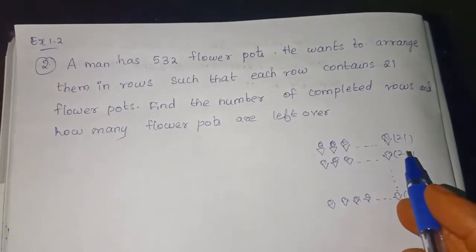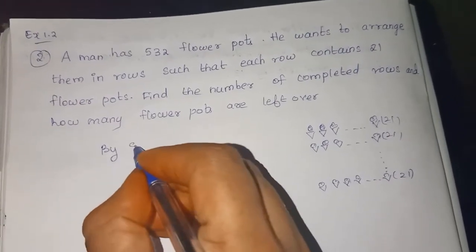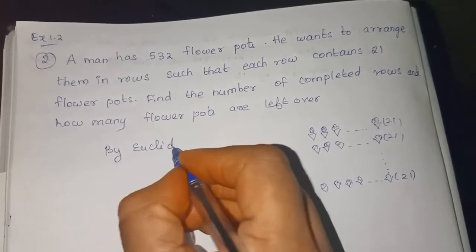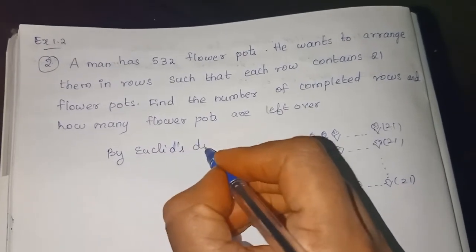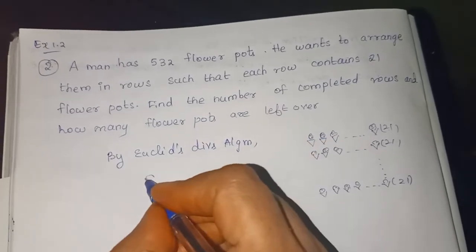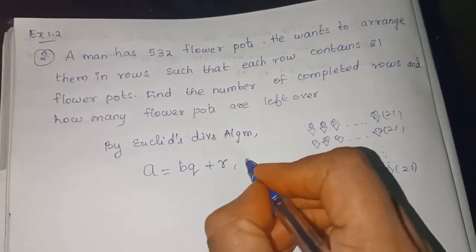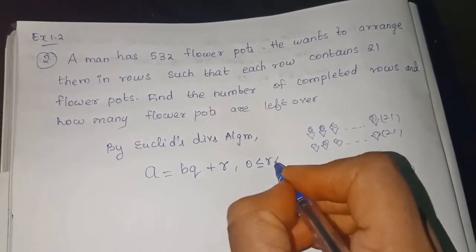We are going to use Euclid's division algorithm. By Euclid's division algorithm, what you have to write: A is equal to BQ plus R. The important condition is 0 less than or equal to R less than B.